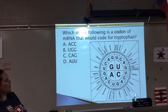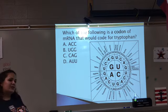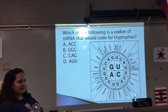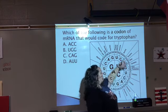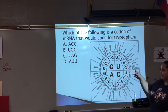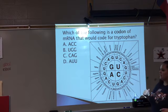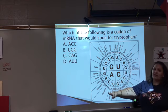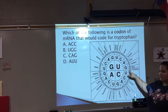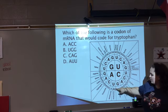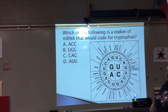This question asks which mRNA codon codes for tryptophan. You're given the amino acid tryptophan, so find it on the wheel — tryptophan is coded for by UGG, so the answer is choice B. Another way to solve this is to look up each codon on the wheel: ACC is threonine, UGG is tryptophan, CAG is glutamine, and AUU is isoleucine. Either way, you get the same answer — UGG is the codon that codes for tryptophan.